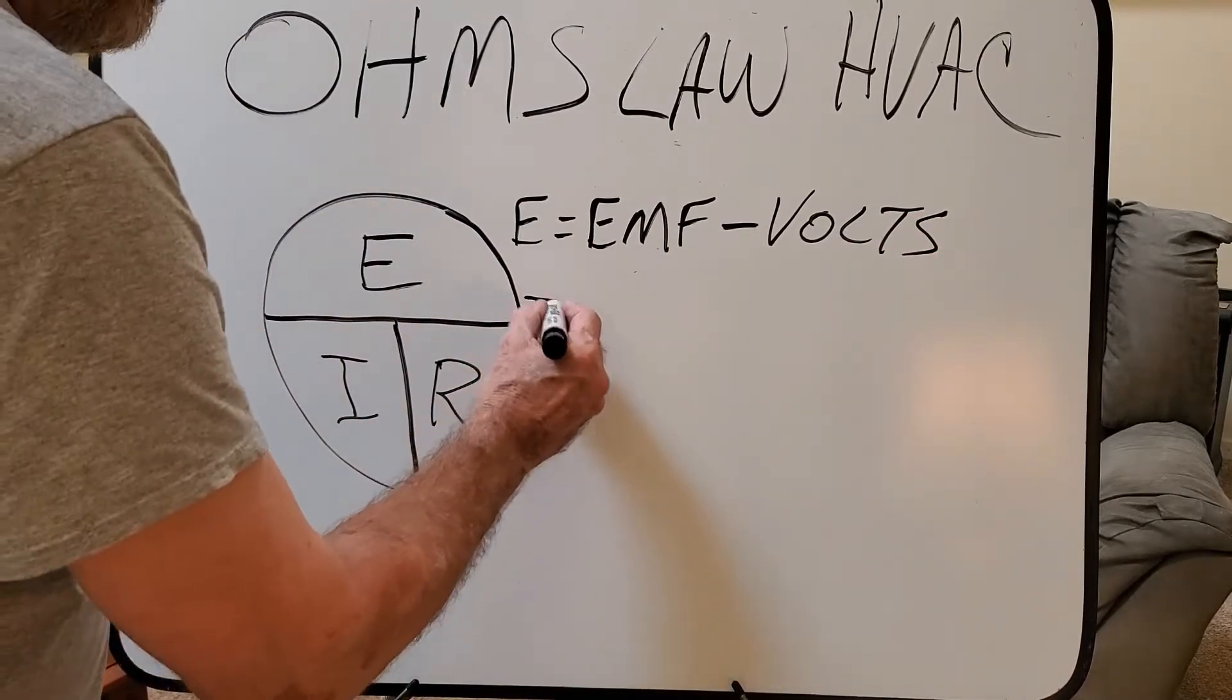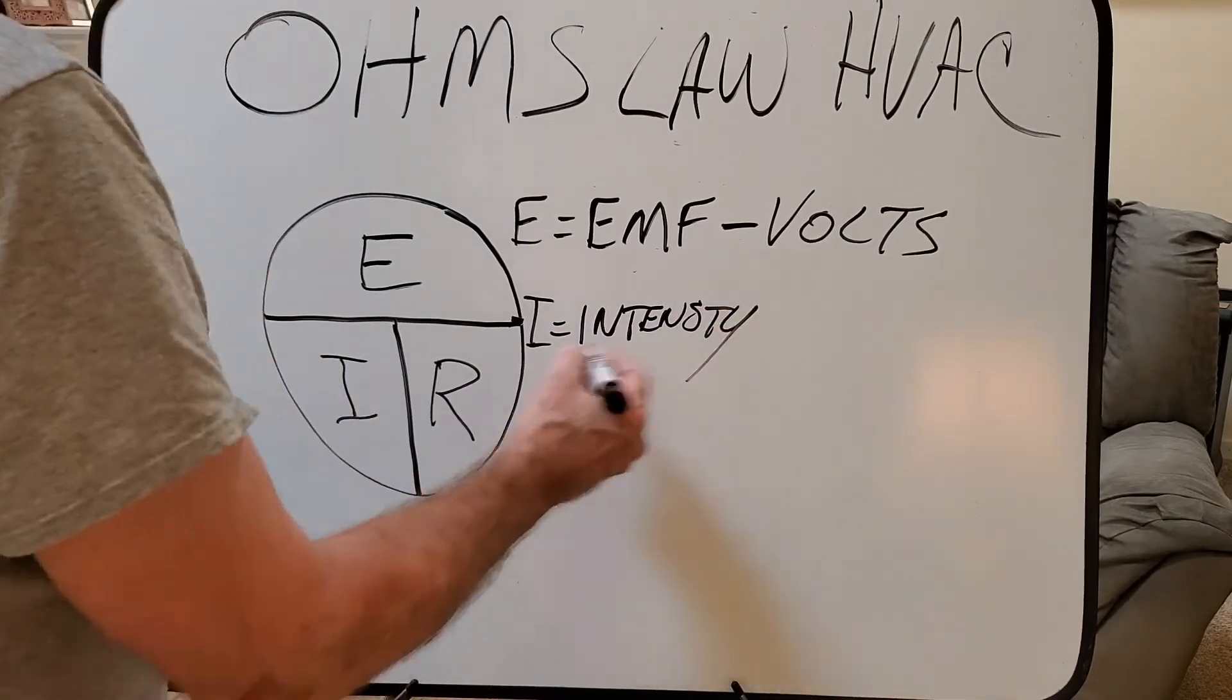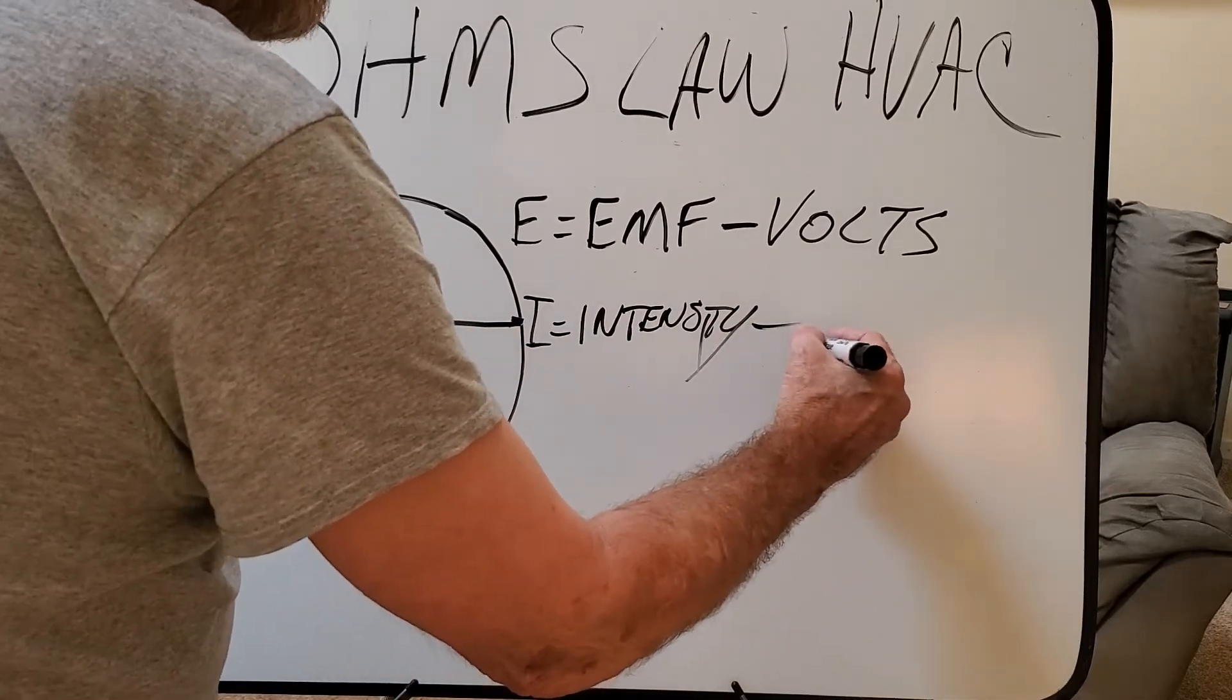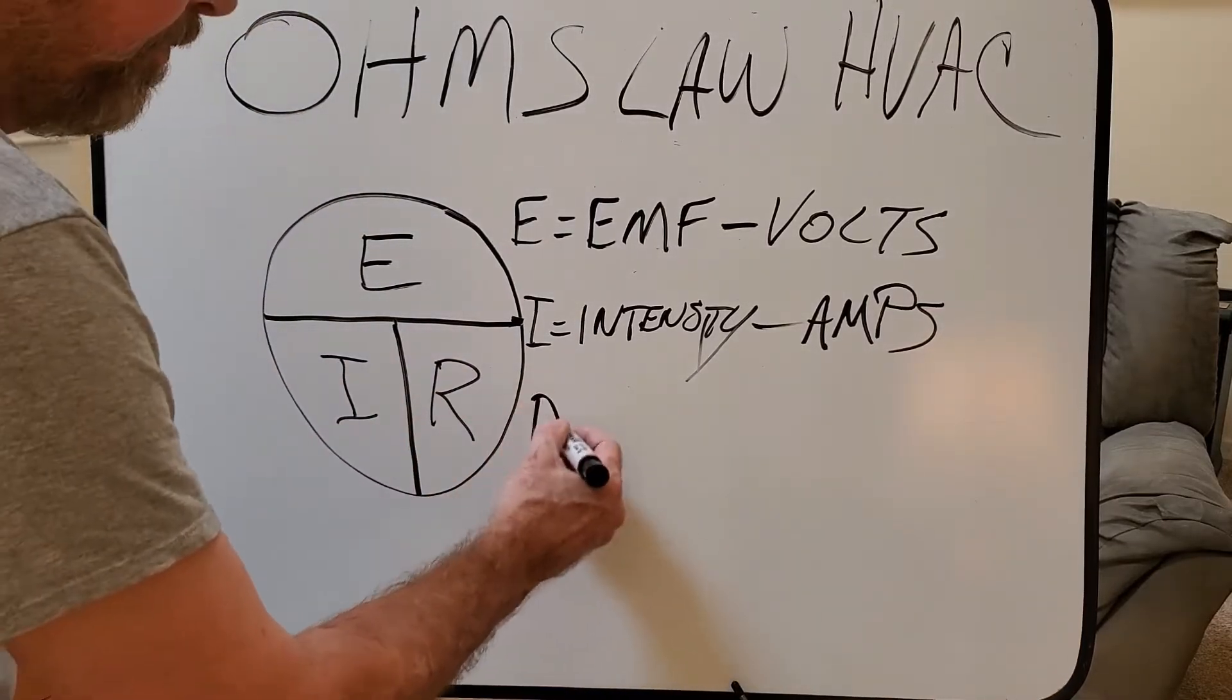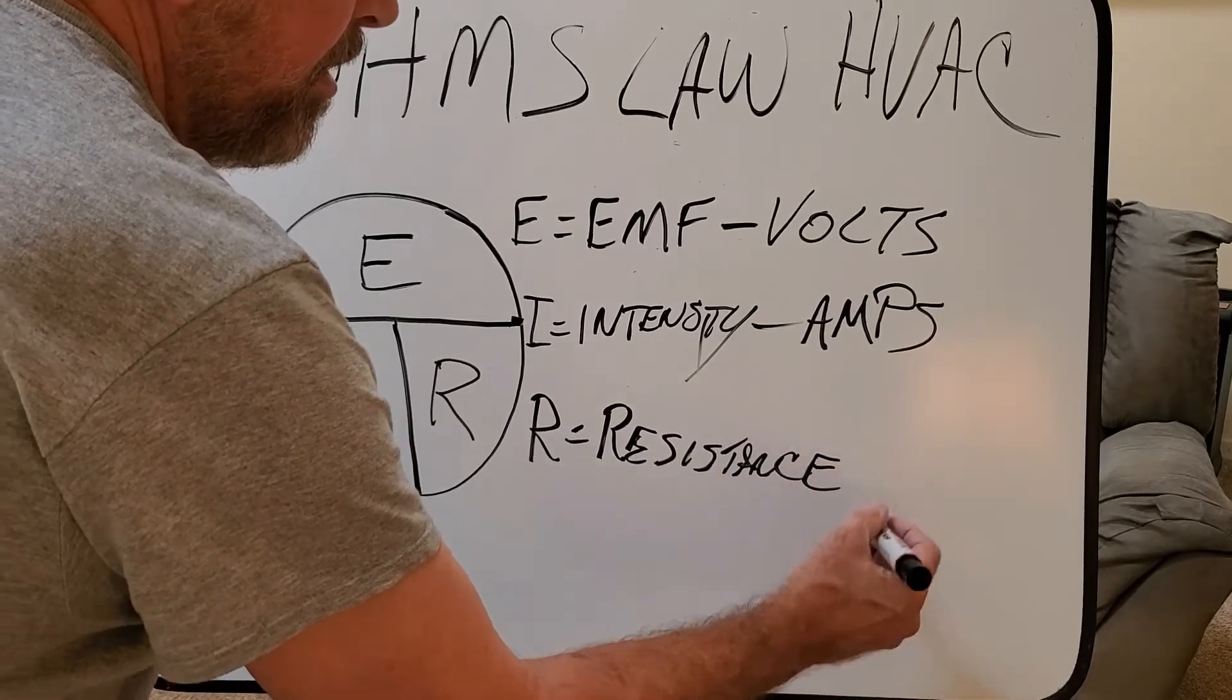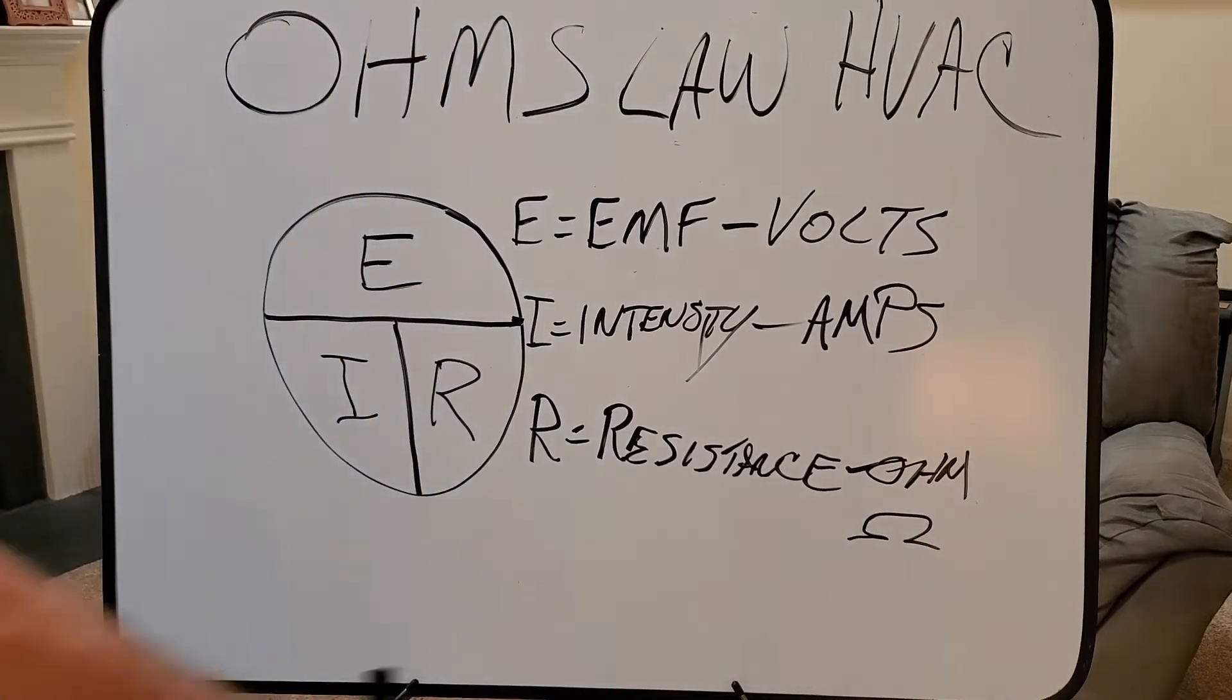The I is for intensity. I think I spelled that wrong. Anyway, and it's measured in amps. And the R is resistance. And that is measured in ohms, or the delta sign. You'll see that on your meter.